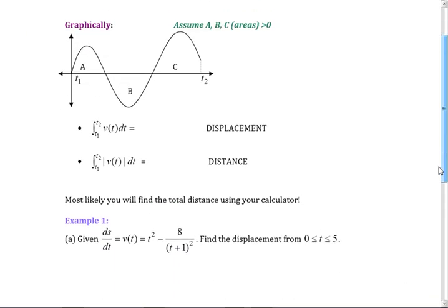Graphically — here are my regions. This looks like an AP question. A, B, and C are positive numbers. In terms of A, B, and C, the displacement is A minus B plus C — B is going to be negative. If you want the distance, it's A plus B plus C. They've had this question on the exam as a multiple choice, so let's get the easy ones right.